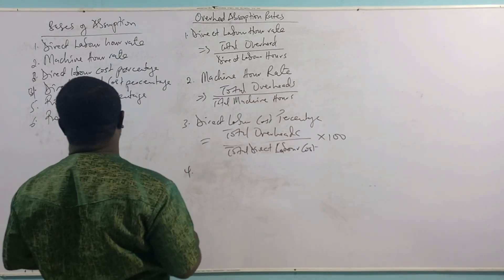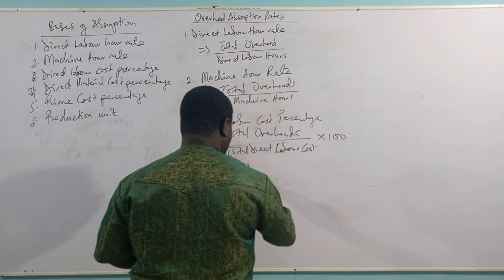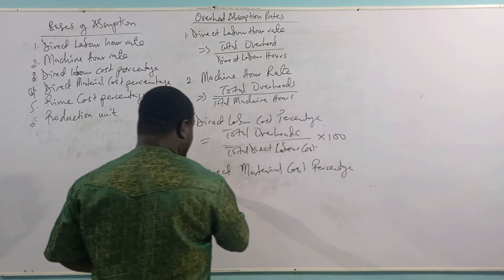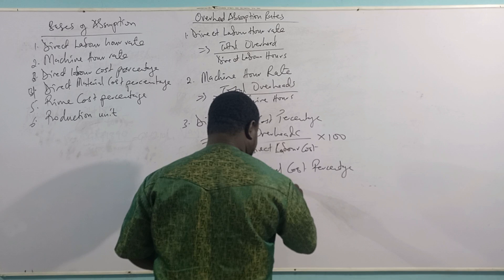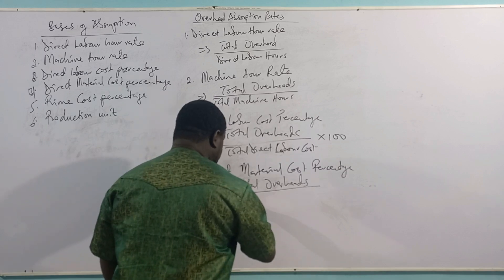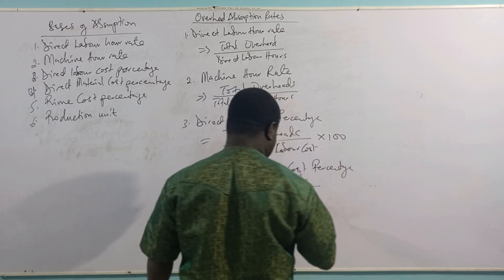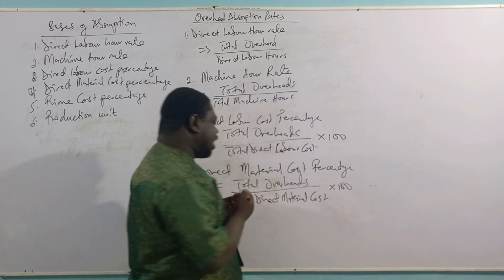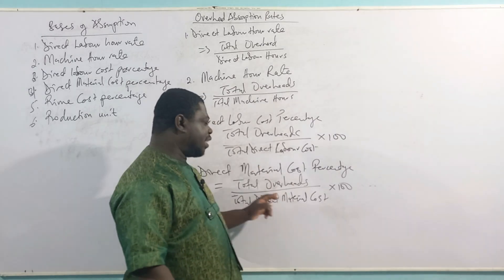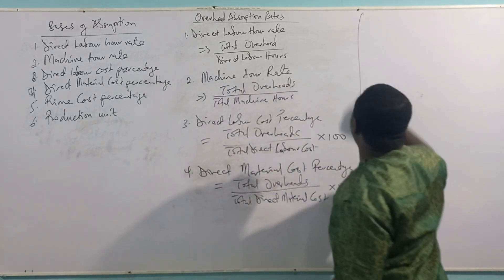The fourth basis is the direct material cost percentage, similar to what we just explained. The formula begins with total overheads as the numerator, divided by total direct material cost — this is in currency, not in hours — times 100. We want to establish what percentage of your material cost the overheads represent. That is how to get the direct material cost percentage as a basis for overhead absorption.